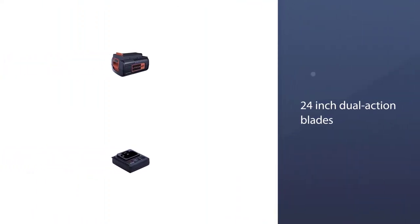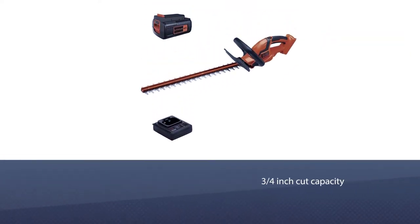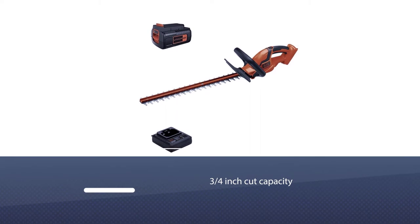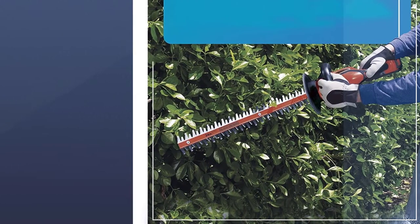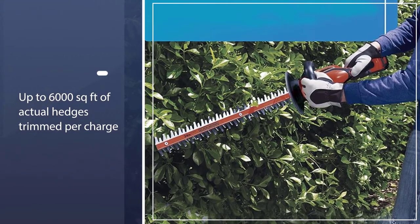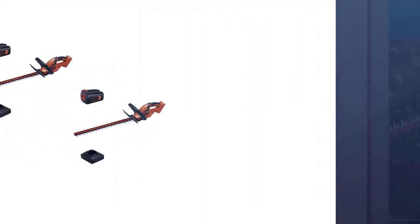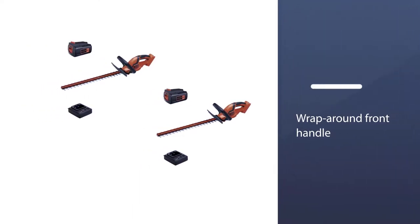It would be difficult to find a hedge trimmer that's as powerful and effective as this model. It's enough to cut through branches up to three-fourths inch thick. The LHT2436 features a full wraparound front handle that provides a comfortable gripping area in all cutting orientations, soft rubber grip, and a built-in cord retention system to avoid accidental unplugging.